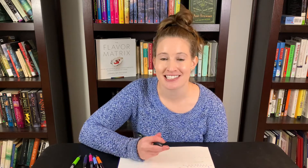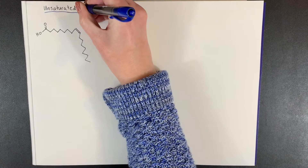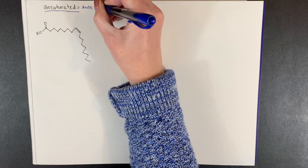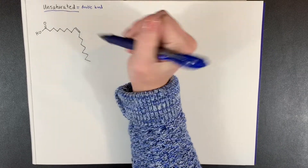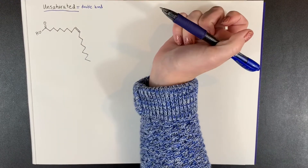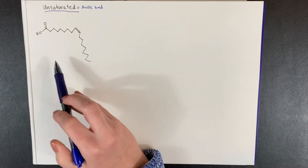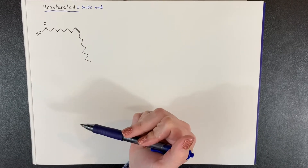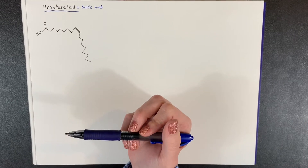Today we'll be talking about unsaturated fatty acids and how to draw their structures and name them. Unsaturated implies that there is at least one double bond. Saturated fatty acids have no double bonds; unsaturated means they have at least one double bond. In this example, you can see there is one double bond right where my pen is pointing. That's what makes saturated different from unsaturated fatty acids — the presence of double bonds.